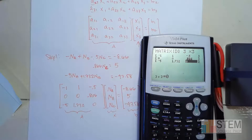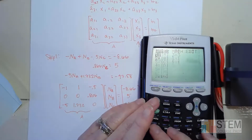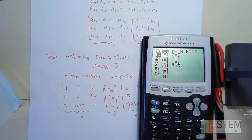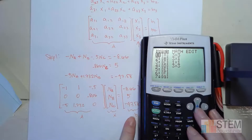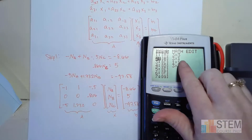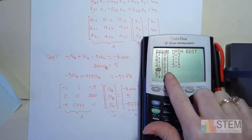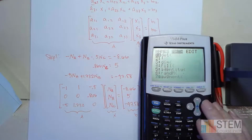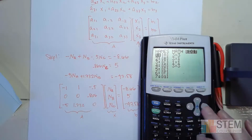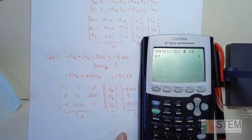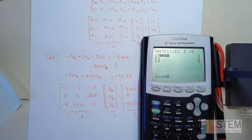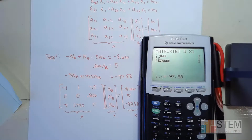Now we need to enter matrix B. I'll show you using slot E. Go back to edit, arrow over and hit 5 since it's empty. The dimensions for this one will be 3×1 — three rows, one column. Now enter your values: −8.66, 5, and −97.58. Now you've got that set up.